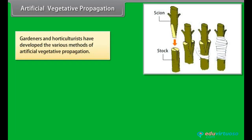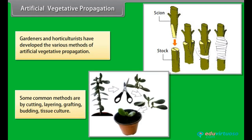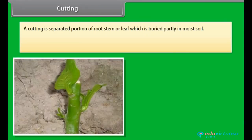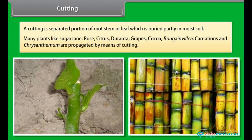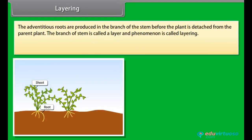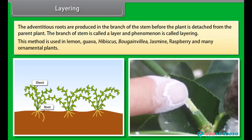Gardeners and horticulturists have developed various methods of artificial vegetative propagation. Some common methods are cutting, layering, grafting, budding, and tissue culture. In cutting, a separated portion of root, stem, or leaf is buried partly in moist soil. Many plants like sugarcane, rose, citrus, duranta, grapes, bougainvillea, carnations, and chrysanthemum are propagated by means of cutting. In layering, adventitious roots are produced in a branch of the stem before the plant is detached from the parent plant. The branch of stem is called a layer, and the phenomenon is called layering. This method is used in lemon, guava, hibiscus, bougainvillea, jasmine, raspberry, and many ornamental plants.